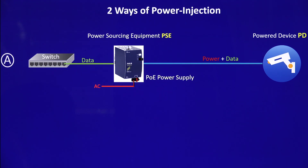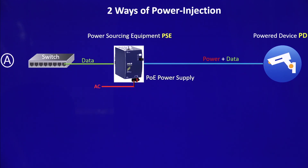How is the power injected into the RJ45 cable? There are two ways of doing it depending on the situation you have on the shop floor. The first situation is when you only have AC grid available. In this case, you can use a power supply with a built-in PoE injector, and this injector will push the power into the existing RJ45 cable and deliver the power to the PD.